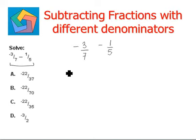Let's see how we can do this. We write the first fraction as it is. Multiply and divide the first fraction with the denominator of the second fraction, that is 5 in this case, minus second fraction as it is. Multiply and divide the second fraction with the denominator of the first one, that is 7 in this case.